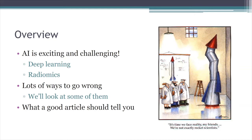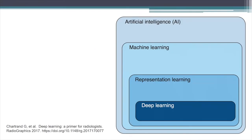I'd like to look at some of those with you today and talk about what a good research article should tell us, because this is really the way we communicate our findings. Deep learning, which has engendered so much enthusiasm recently — particularly in image-rich areas of medicine like radiology and pathology — is really just one part of the broader field of artificial intelligence, which also includes automated reasoning, robotics, and knowledge representation.